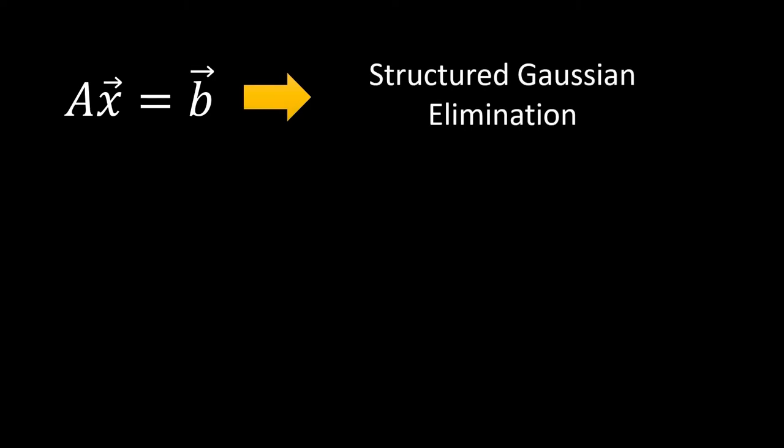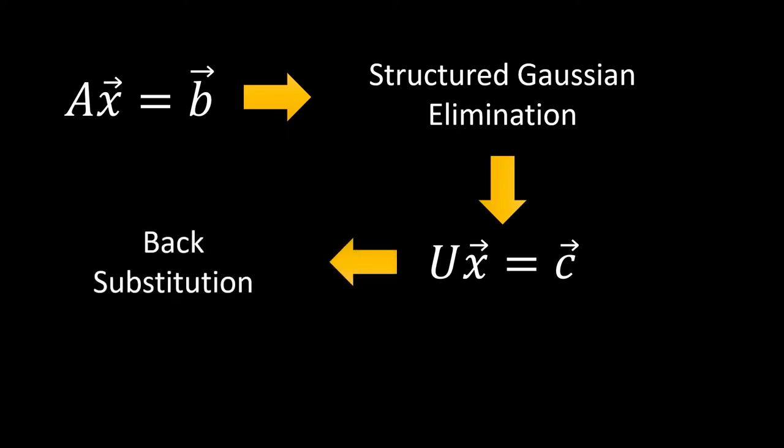So far through the first four episodes, we've seen how we can solve an AX equals B linear system by plugging it into the structured Gaussian elimination algorithm, which gives us an upper triangular system. We can then solve for the X vector in that upper triangular system by tossing it into the back substitution algorithm, which gives us our solution.